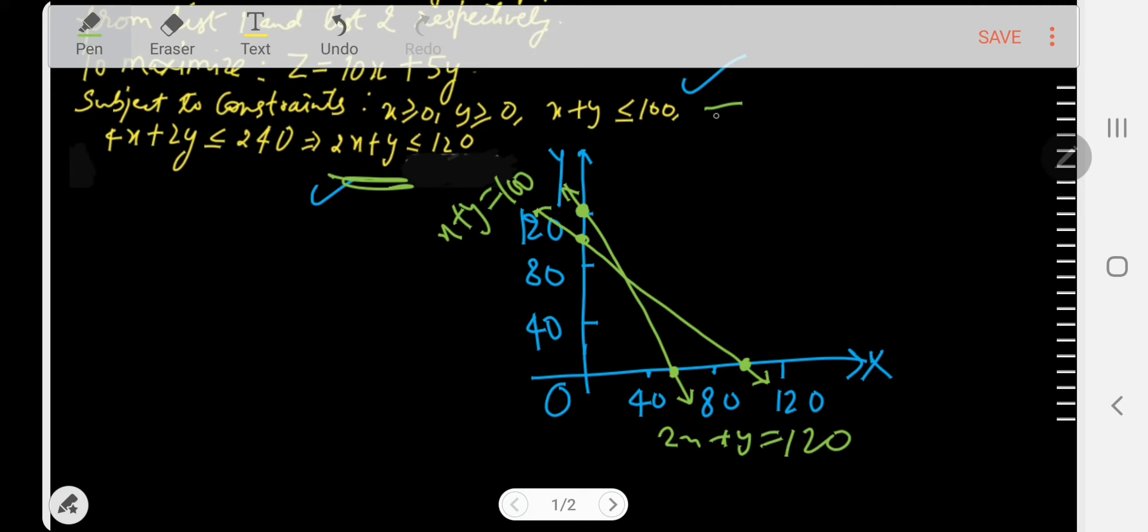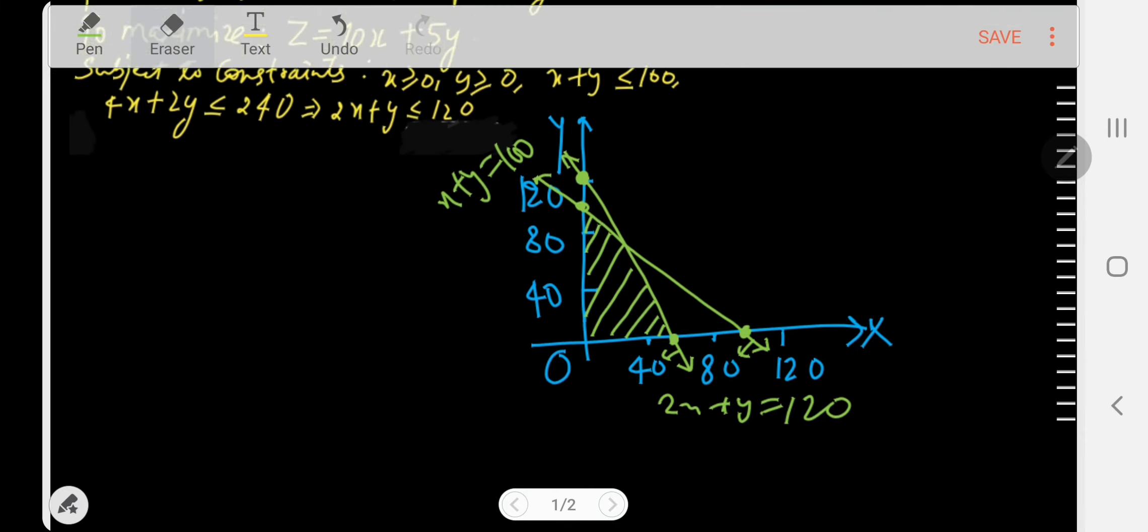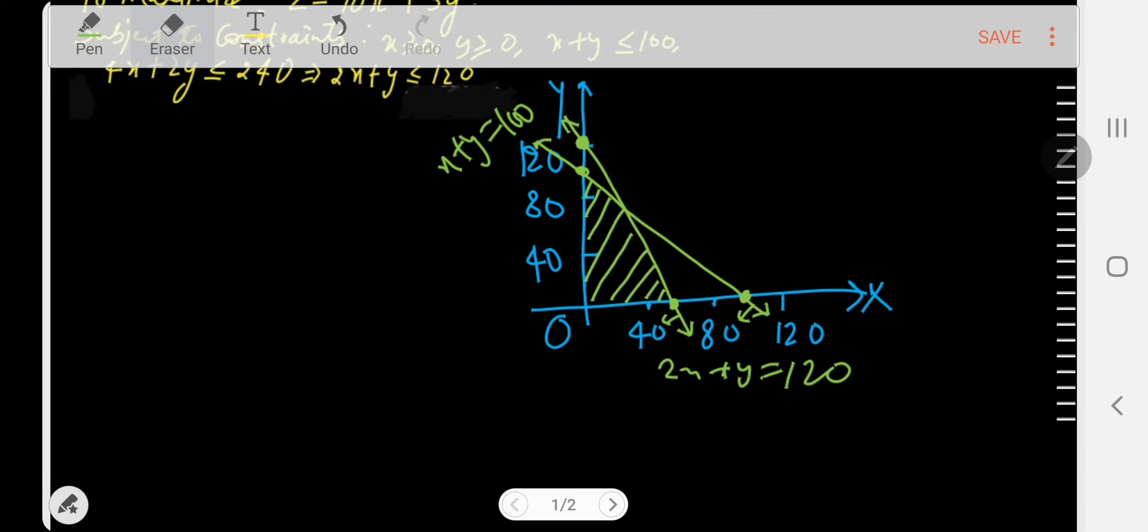Once we take the testing point for this as (0,0), you can see it is 0 less than or equal to 100, means it is true, so the shading will be done towards testing point (0,0). For this also, if we take (0,0) as testing point, it will be 0 less than or equal to 120, means it is also true. The shading will be done towards origin. Here will be the common feasible region for the given constraints.